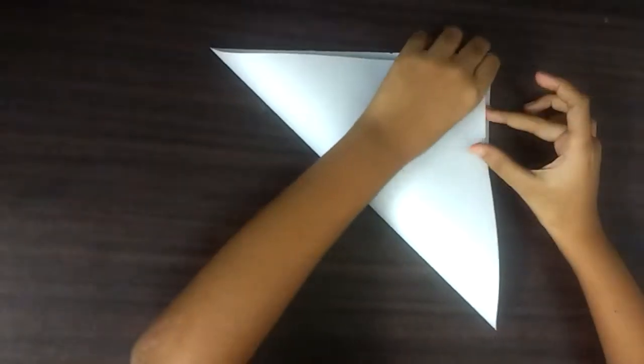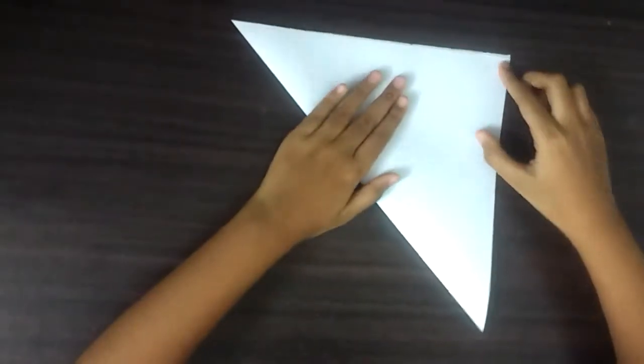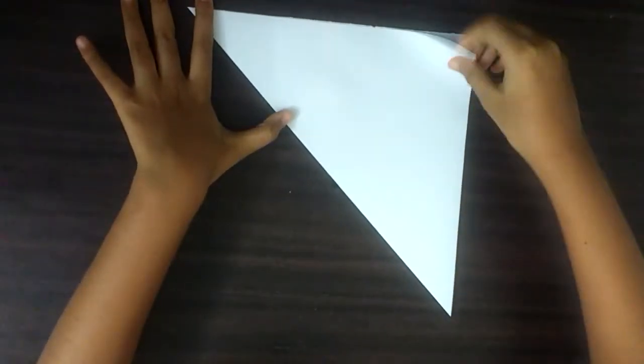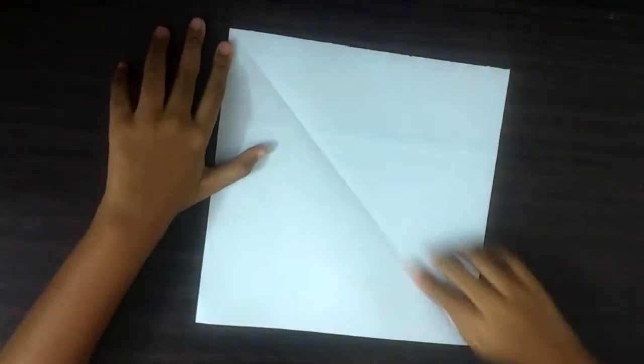Fold one corner of the paper and fold it to the other corner. Open it, we get a diagonal line.